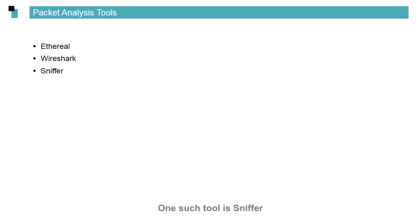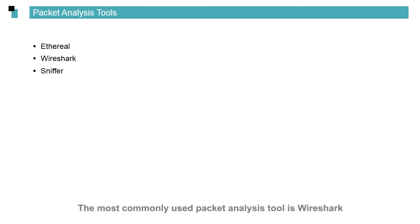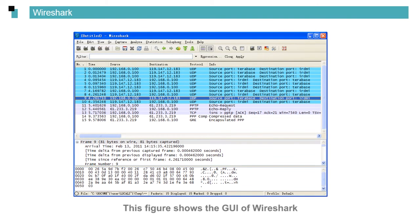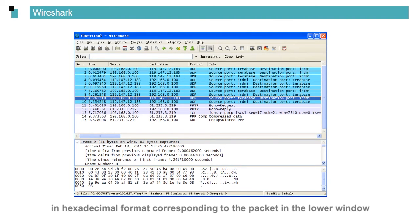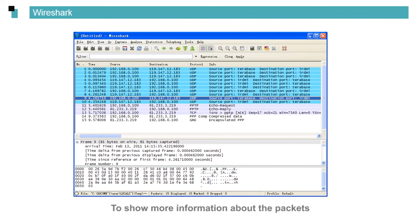There are multiple packet analysis tools. One such tool is Sniffer, which is both powerful and complex. The most commonly used packet analysis tool is Wireshark, which is easy to use. The figure shows the GUI of Wireshark. In the main window we can see multiple packets. By clicking a packet, we can find the fields in hexadecimal format corresponding to the packet in the lower window. The packet information includes the source and destination IP addresses and the protocol used. You can expand the fields in the window to show more information.